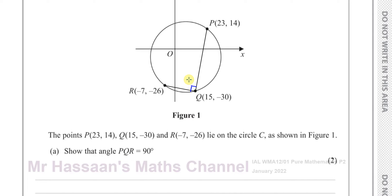However, that's a lot of work. There's a much easier way of doing it, and that is by using gradients, because we know that the gradient of a line and its perpendicular line are negative reciprocals of each other. In other words, if you multiply the gradient of a line by the gradient of a perpendicular line, you'll always get negative 1 as a result.